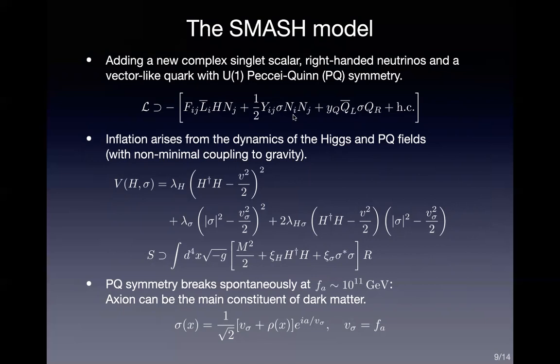The right-handed neutrinos provide neutrino masses via the seesaw mechanism and lead to thermal leptogenesis that explains the baryon asymmetry. The heavy quarks are introduced to address the strong CP problem based on the KSVZ axion model. Furthermore, the model addresses inflation based on the dynamics of the Higgs and Peccei-Quinn fields — introducing a non-minimal coupling to gravity leads to a flat potential necessary for slow-roll inflation. After inflation, the Peccei-Quinn symmetry breaks spontaneously, and the resulting axion can be the main constituent of dark matter.